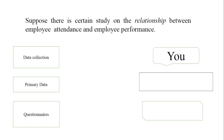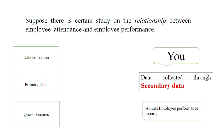But suppose you are interested in studying the relationship between employee attendance and employee performance from a different angle, using a different method. For example, you are going to collect secondary data from the annual employee performance reports available within the organization. The key question is: you need to justify why you are using secondary data instead of primary data. You can argue that data collected from employees themselves may be subject to bias, since employees will never give negative or adverse answers about their own attendance and performance.